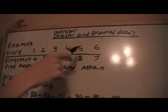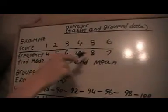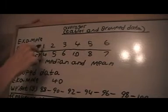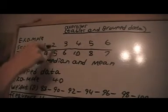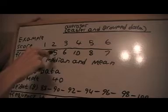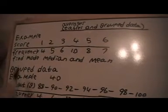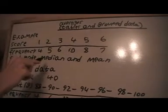...scores you get when you roll a dice and these are the frequencies below. So ones have been scored four, and two has been scored five times, and so on. We want to find the mode, the median, and the mean.